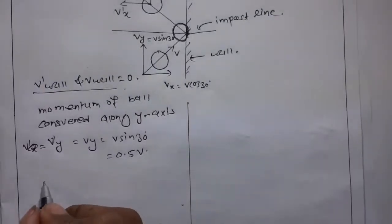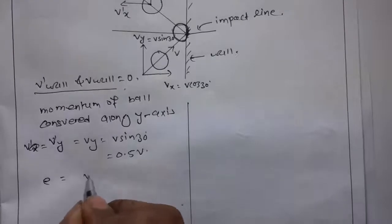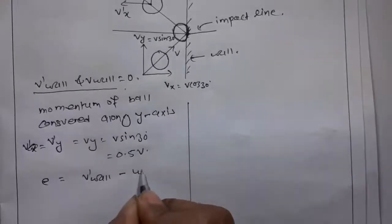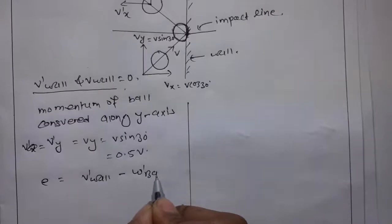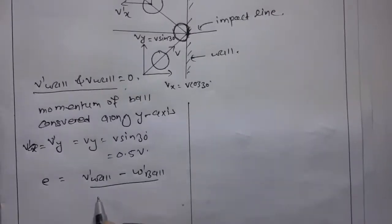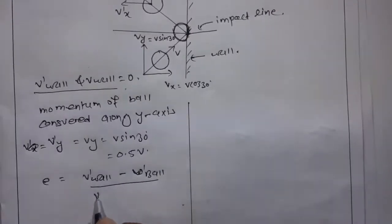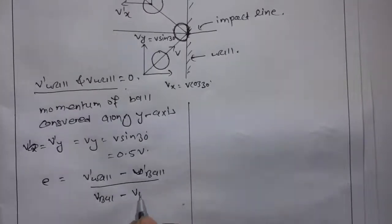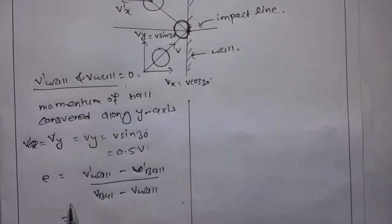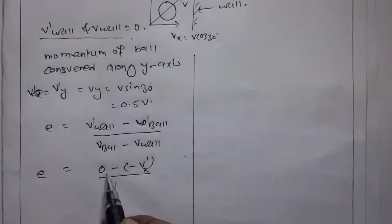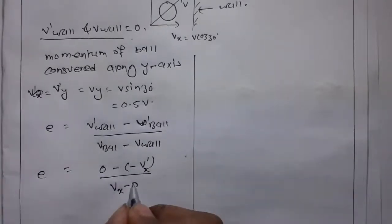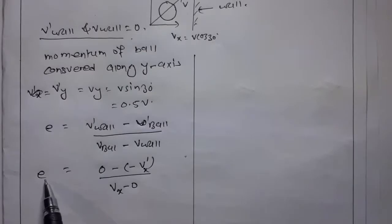We have coefficient of restitution e as v dash wall minus v dash ball upon v ball minus v wall. E is equal to 0 minus negative v dash x upon v x minus 0.